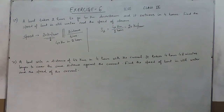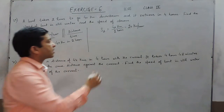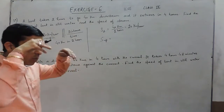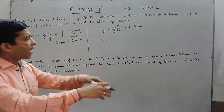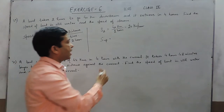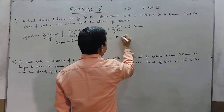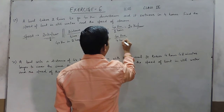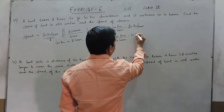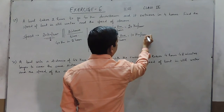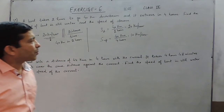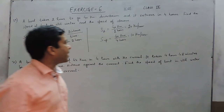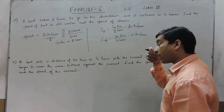Now, when it returns in 4 hours, that means the speed upstream — downstream is with the stream and upstream is against the stream. Here, the distance again is 40 km, divided by the time of 4 hours, and it comes out to be 10 km per hour. So the speed downstream is 20 km per hour and the speed upstream is 10 km per hour.